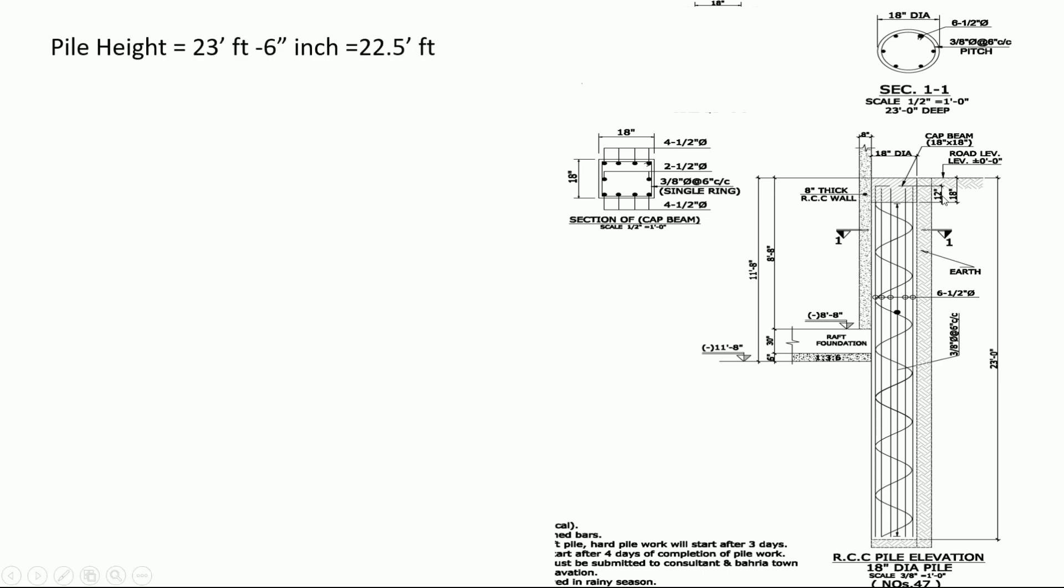First we subtract from 23 feet. We have pile height 23 feet minus 6 inches, which equals 22.5 feet. Now we have pile covering deduction. Here is 3 inches total: 1.5 inch one side and 1.5 inch both sides. We subtract 1.25 feet diameter.